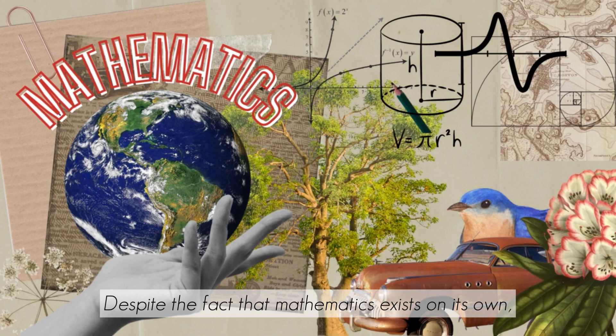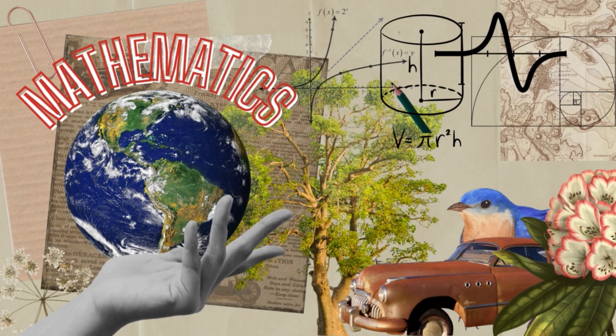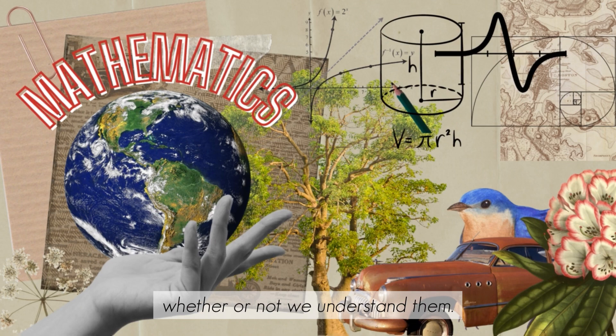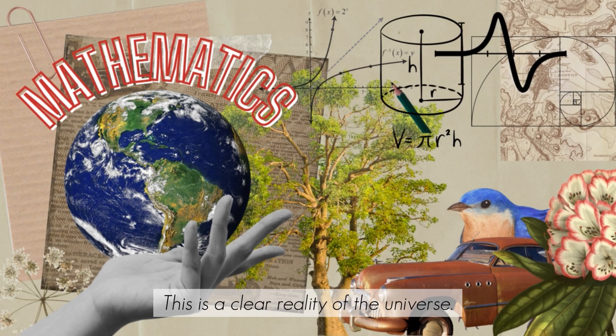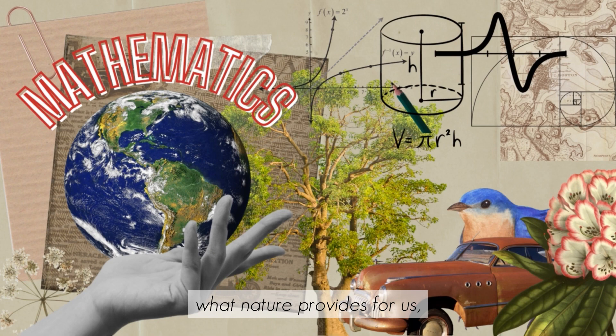Despite the fact that mathematics exists on its own, humans invented it in the form that we use today. Because things will always do what they're supposed to be doing whether or not we understand them. This is a clear reality of the universe. To fully understand, interpret, and describe what nature provides for us, we invented or created mathematics.